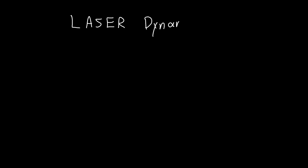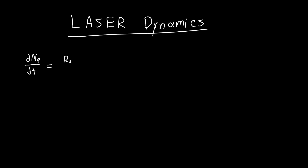In this video we're going to continue with laser dynamics, or the laser frequency response, and try to solve the differential equations presented last time. The first one deals with the number of photons within our cavity. That differential equation states that the rate of change of the number of photons equals our stimulated emission term times our active region volume, minus the number of photons we lose to the outside world — NP divided by our photon lifetime tau_P.